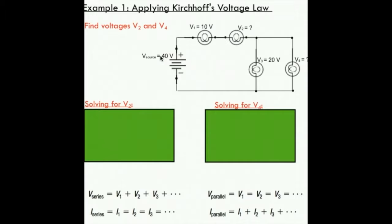This is telling me that I've got 40 volts at my source here, and my current's flowing through my circuit hitting these various lamps. We're measuring the voltage at these various lamps throughout the circuit. We want to solve for V2 and V4.